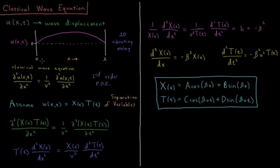So the classical wave equation that we're going to solve for this one-dimensional case is that the second partial derivative of the displacement with respect to position is equal to 1 over velocity squared times the second partial derivative of its displacement with respect to time.